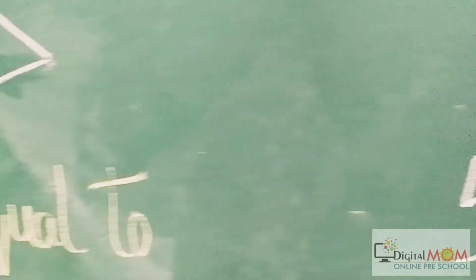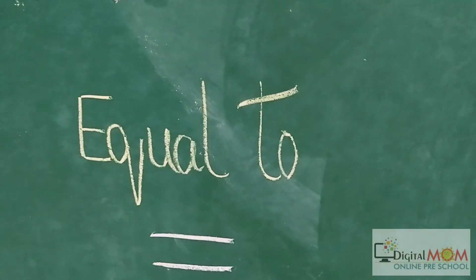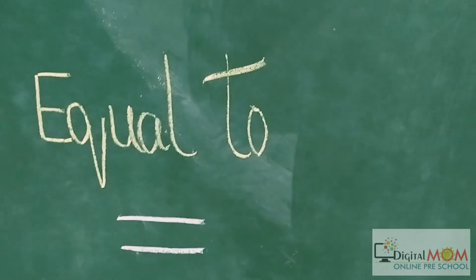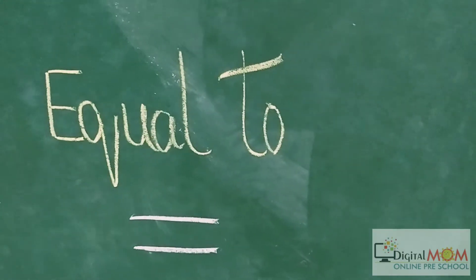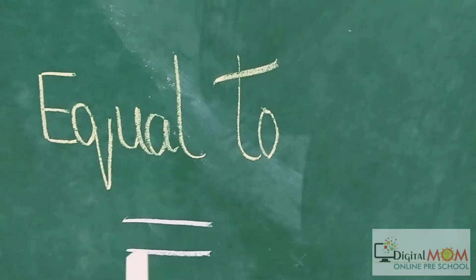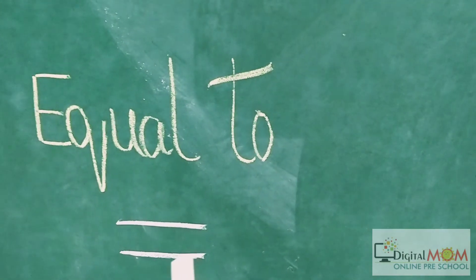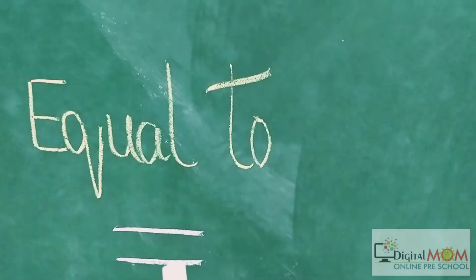Now let's move onwards. We have to put the sign of equal to. Equal to means two sleeping lines with a space in between. This is the sign of equal to.